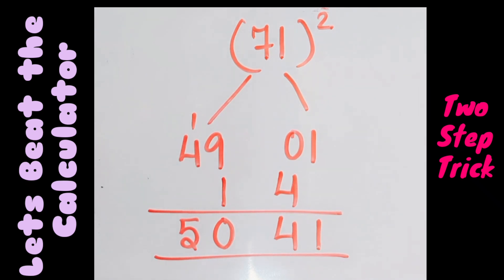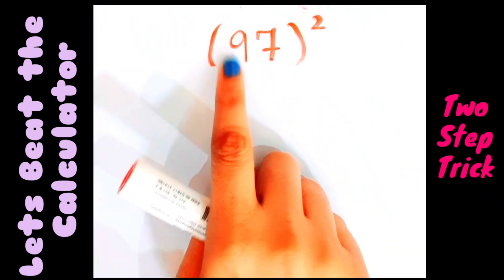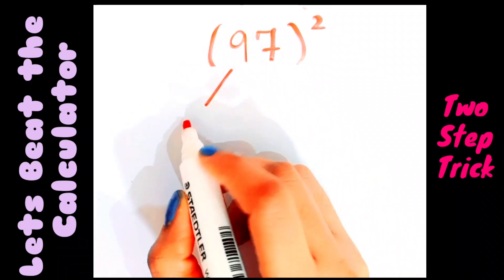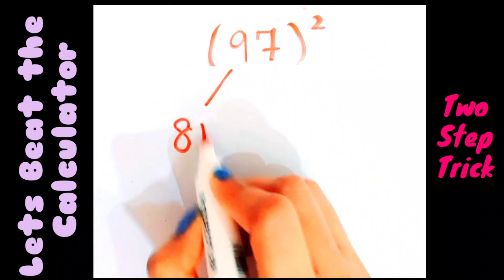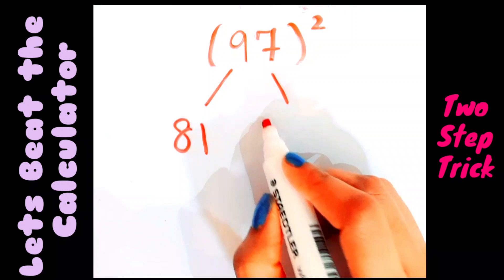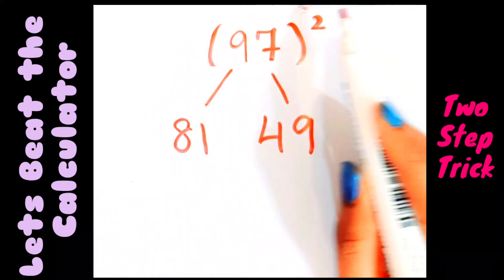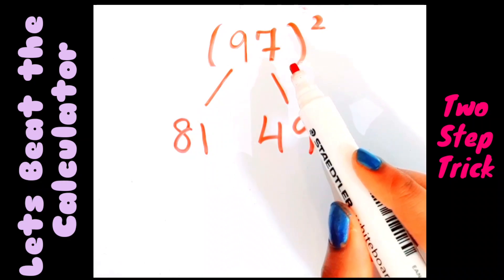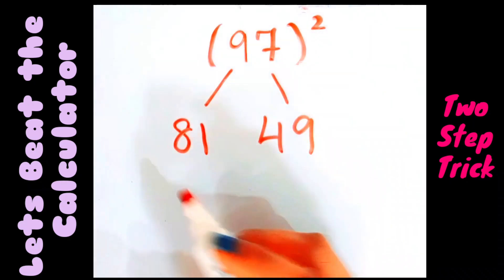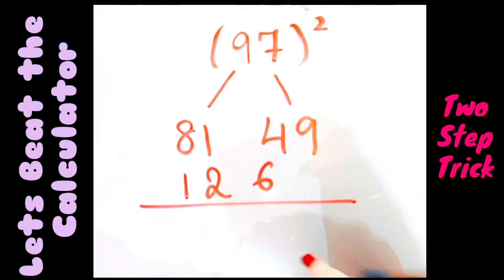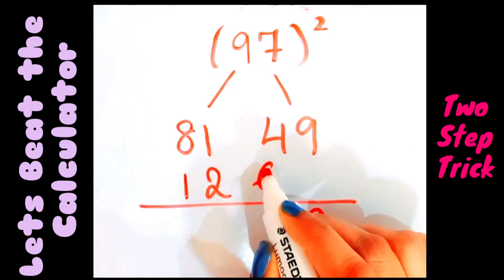Let's move to the next question. If you have to find the square of 97, same step. Find the square of 9: 9 into 9 is 81. Find the square of 7: 7 into 7 is 49. Next, multiply all these three numbers, that is 9 into 7 is 63, and 63 into 2 is 126. Leave the first one, write 126. Now add all these three.